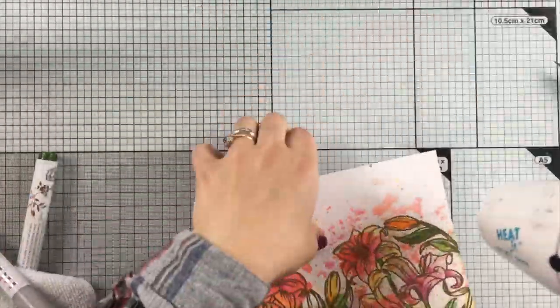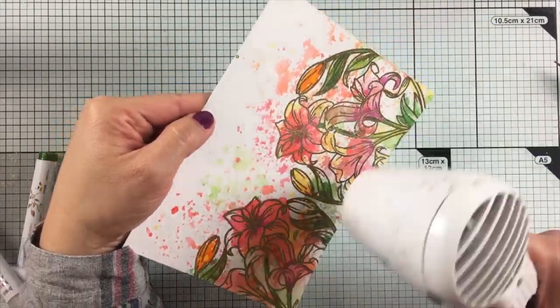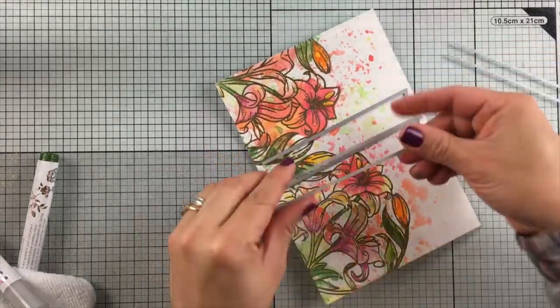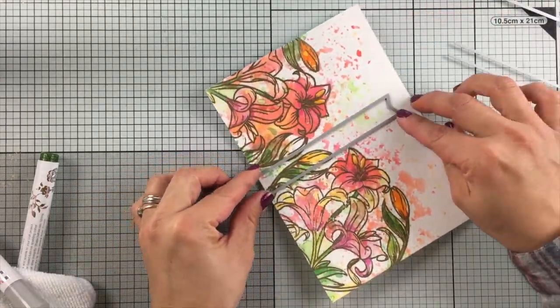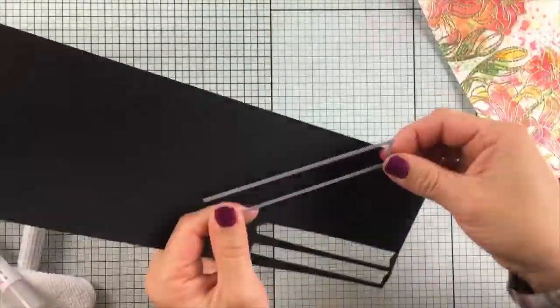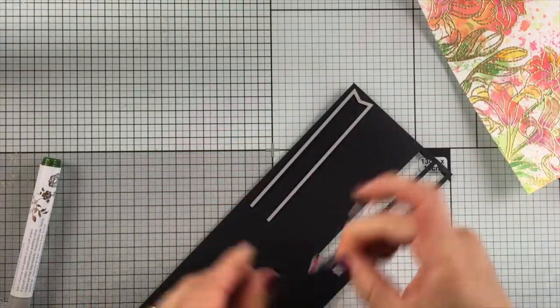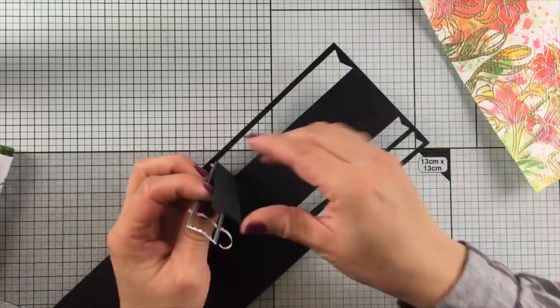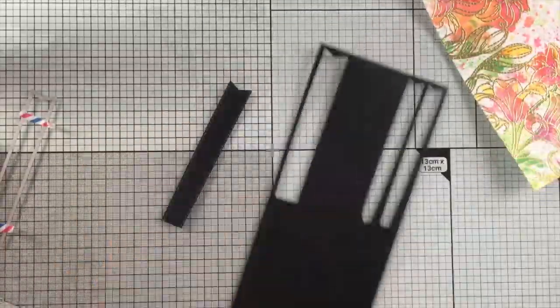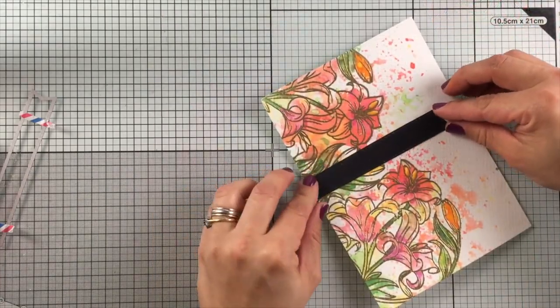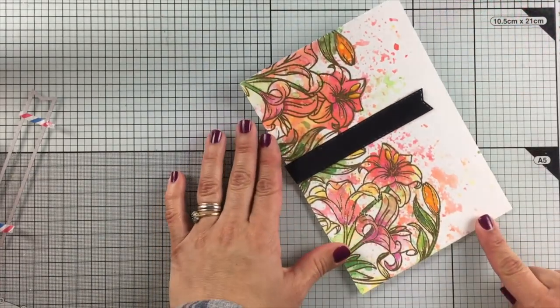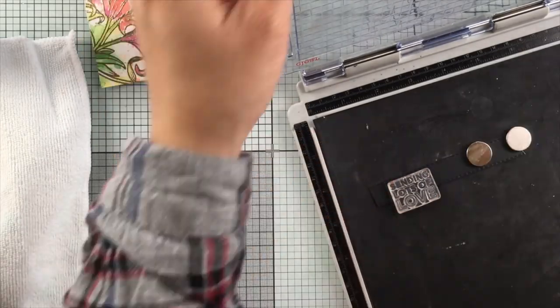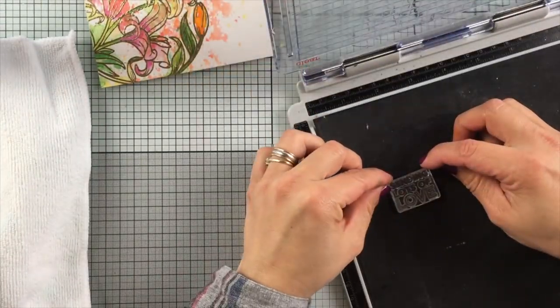Now I'm going to use the banner dies—this is the medium size die. These dies are going to allow me to create perfect banners with the plus of having that stitched pattern all around the edge. I'm going to partially stamp this sentiment on that banner and show you how to do that.